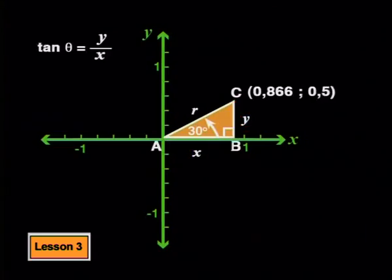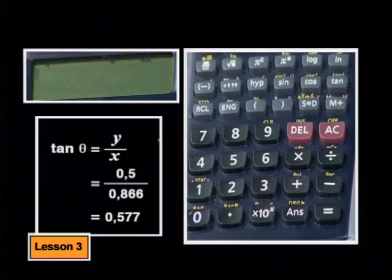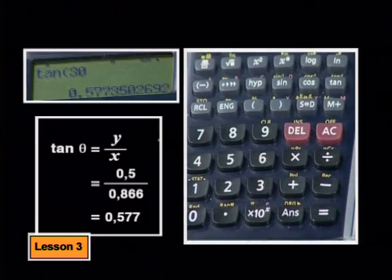For example, for theta at 30 degrees, tan of theta will be 0.5 divided by 0.866, which is 0.577. We can check that on the calculator. Tan 30 is, yes, 0.577.